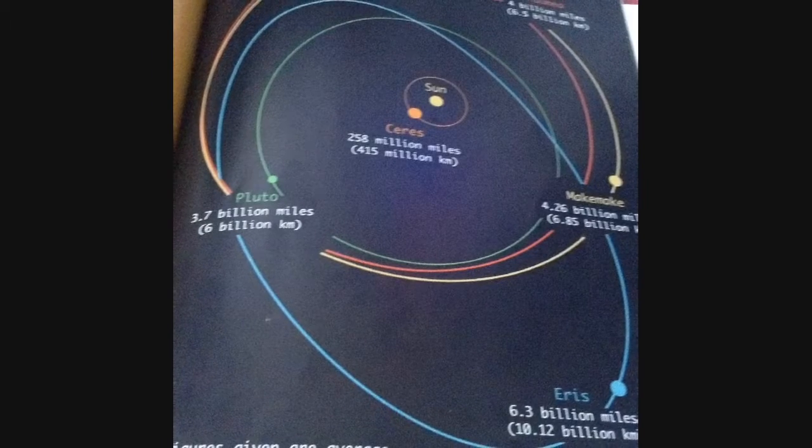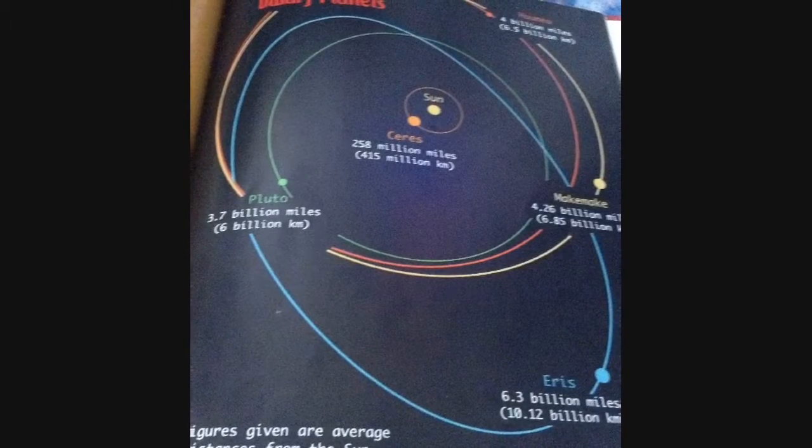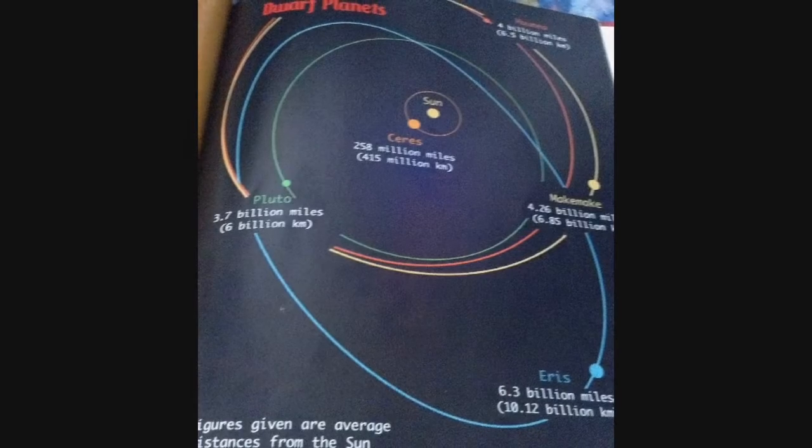Orbit means to go around something. For example, the moon orbits the earth and the earth orbits the sun.